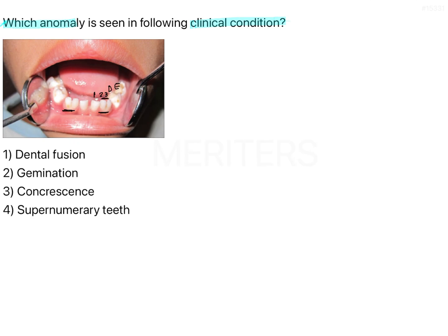If you look at the image clearly, the central incisor is there and the lateral incisor and canine are combined together. There is no additional tooth present. The number of teeth — 1, 2, 3 — are in the same order, and there is no additional tooth as a separate entity. So it cannot be supernumerary teeth.